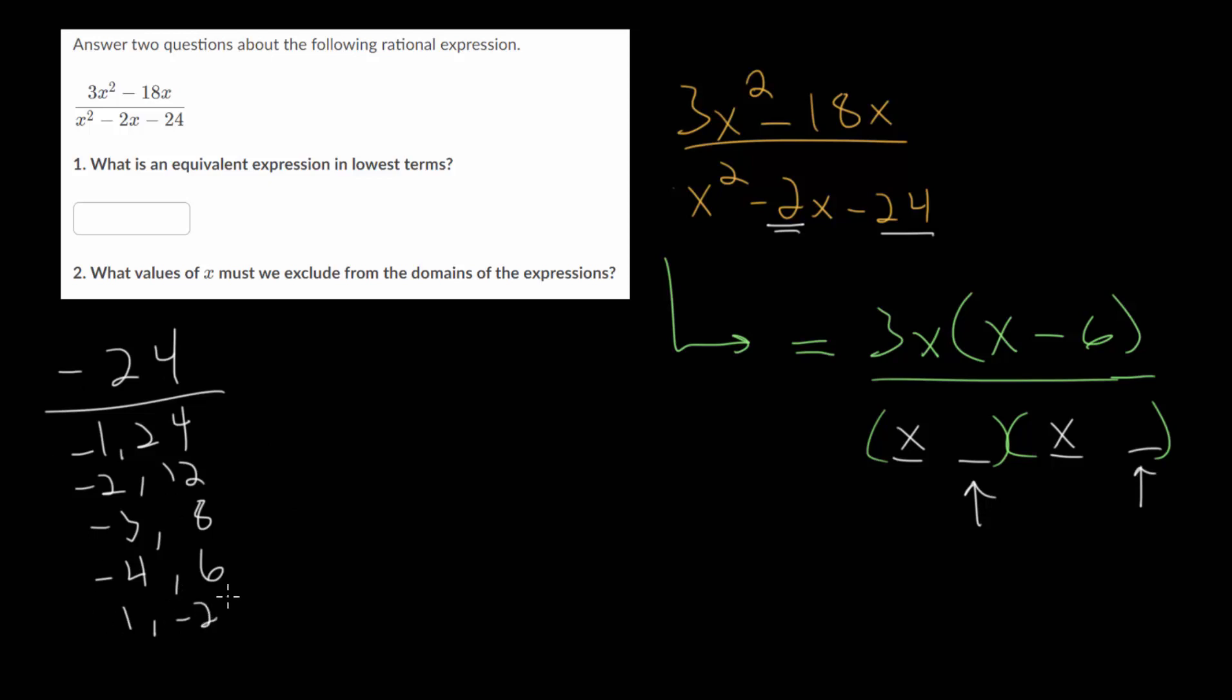It could be 1 and minus 24, 2 and minus 12, 3 and minus 8, or 4 and negative 6. From here we need to determine which of these pairs adds up to negative 2. That would be 4 and negative 6. So we have plus 4 and minus 6.